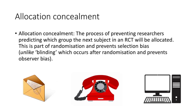Allocation concealment is the process that prevents researchers from predicting which group the next subject will be placed in within a randomized controlled trial. This prevents selection bias, whereas blinding prevents observer bias. There are various ways to perform allocation concealment: sequentially numbered opaque sealed envelopes, a computer-generated number method, or a telephone call to a trials office so that trial researchers can allocate the patients.